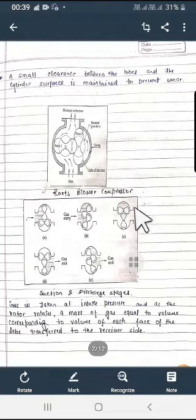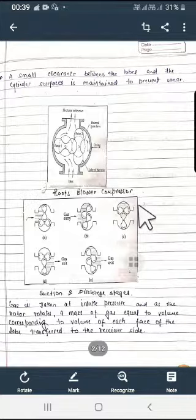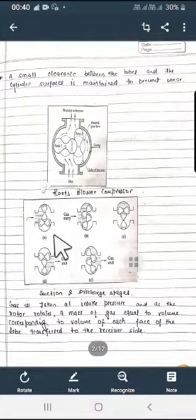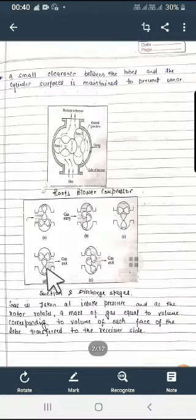The air is now delivered to the receiver by the rotation of the lobes. That means, as these two ends are closed, the air is discharged to the receiver end and the discharge end is received.